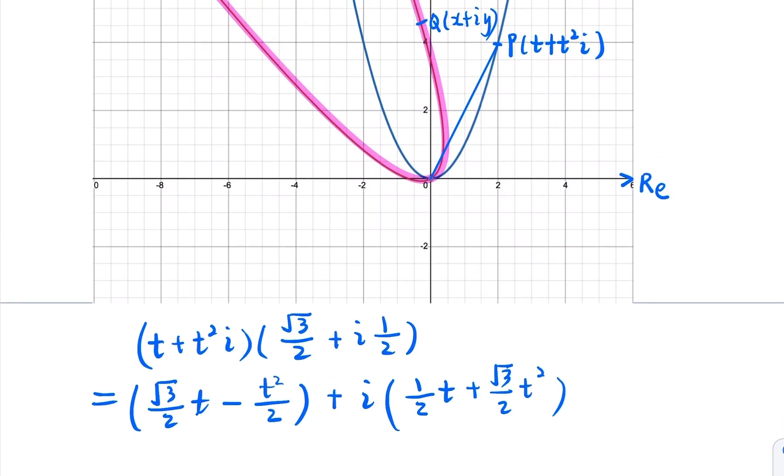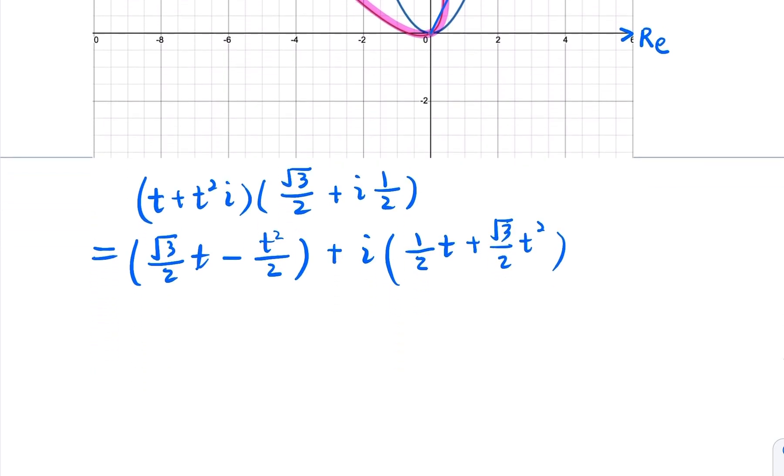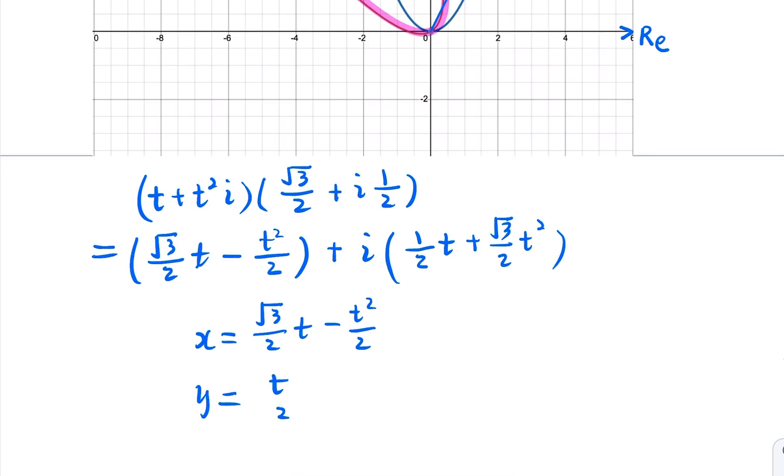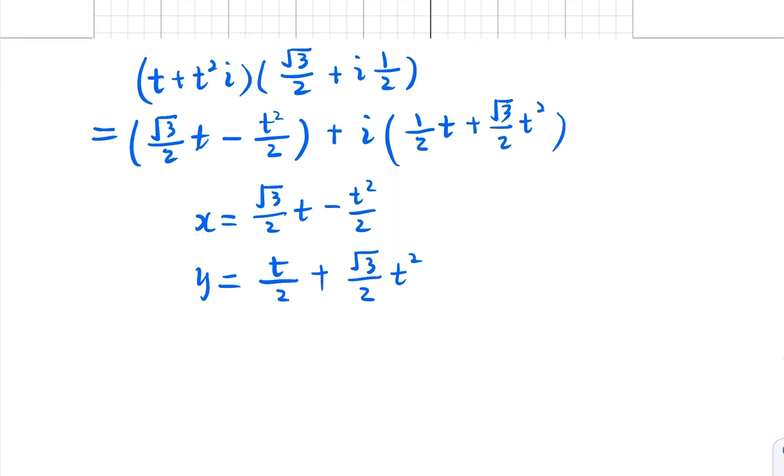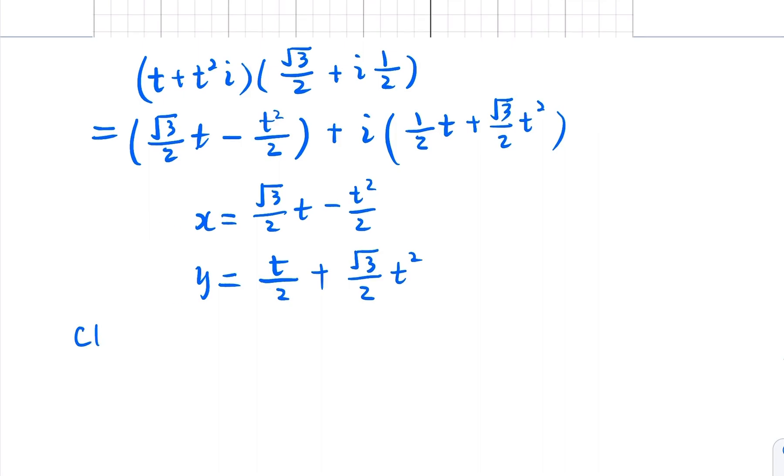So in the new curve, the point q, x, y, with the parameter t, you're going to have x is going to equal square root of 3 over 2 t minus t squared over 2. Y would be this part, the imaginary part. So it's going to be t over 2 plus square root of 3 over 2 t squared. So that would be the equation with parameter t. That would be x and y. But how do we find the closed form formula here?